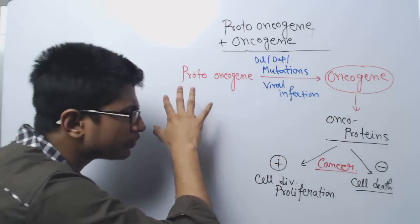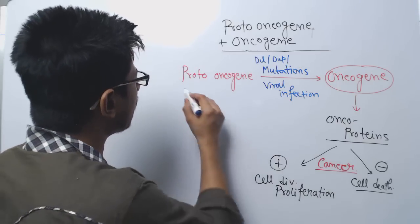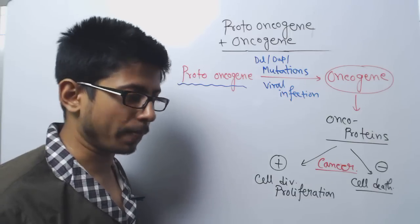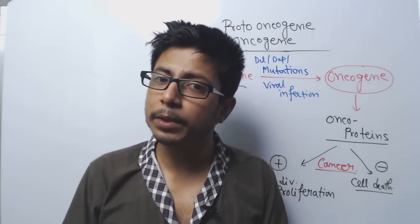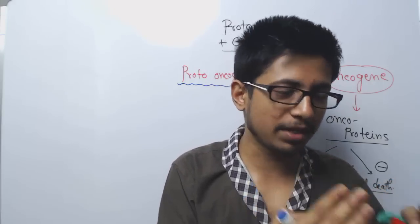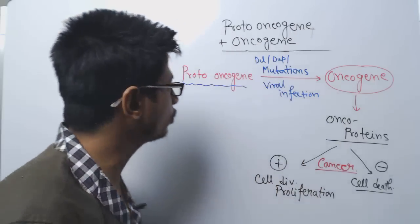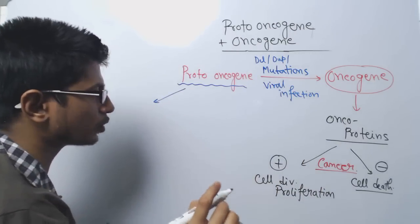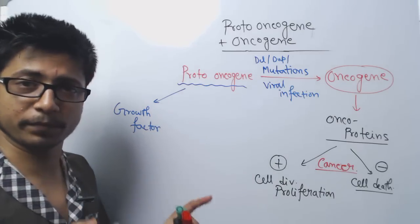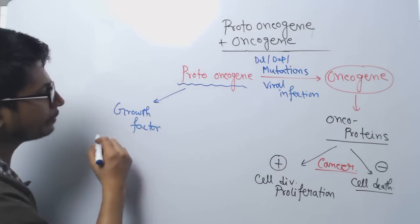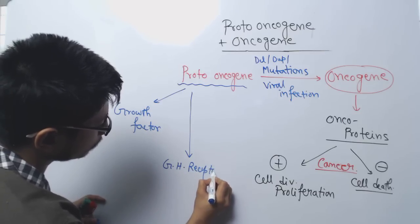What are the functions of proto-oncogenes inside the cell? All the proto-oncogenes we know are really important genes that should be present in our body. They function to produce all the proteins necessary for the cell to divide and proliferate — cell division is very important and is required for cells to live and produce new generations. Some proto-oncogenes are growth factors, and some are growth factor receptors.